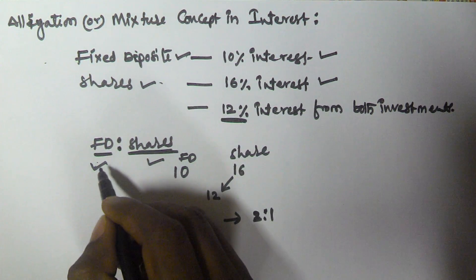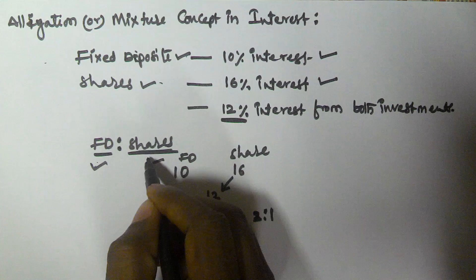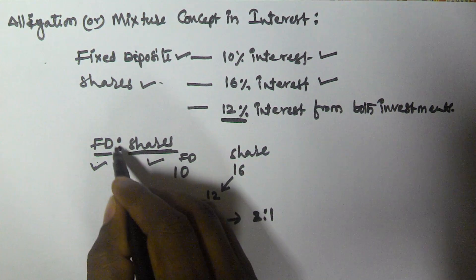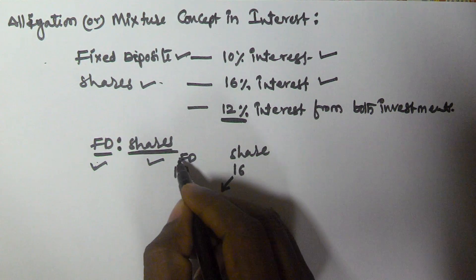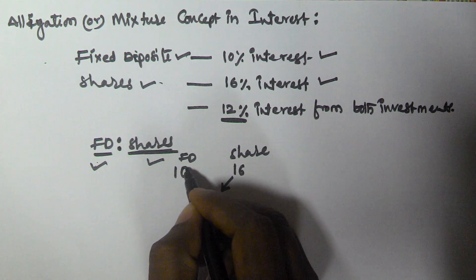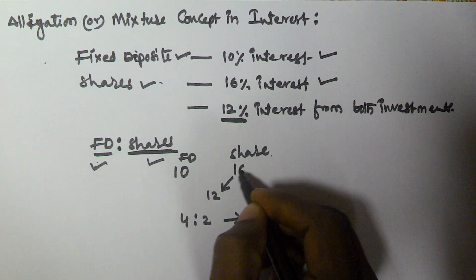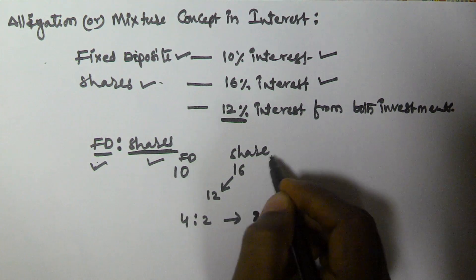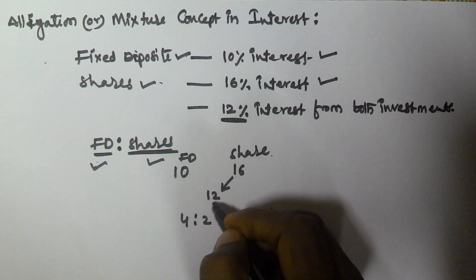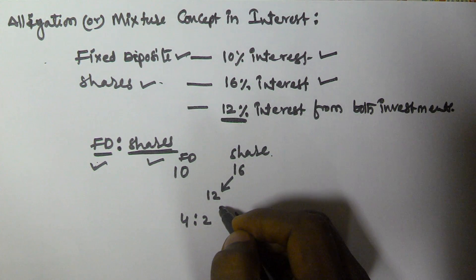So we need to find the fixed deposit and shares ratio. In FD he is getting 10% interest, in shares he is getting 16% interest, and from both investments he is getting 12% interest.